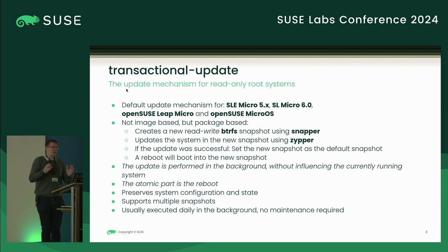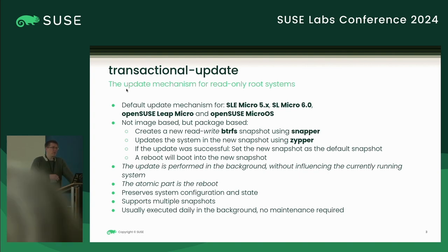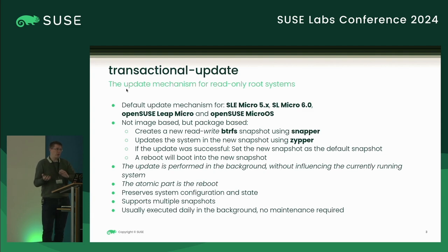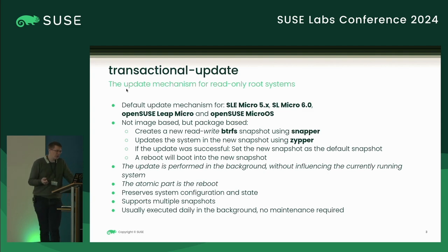Transactional update is the update mechanism for read-only distributions. Usually you use Zypper for updating a conventional distribution, but if the file system is read-only, you obviously can't do that. To do that nevertheless, transactional update was invented. It will create a new snapshot — our default file system is Btrfs, which uses a snapshotting mechanism. Using a tool called Snapper, we create a new snapshot, and within that snapshot we call a regular Zypper update or whatever else we want to change in the root file system.